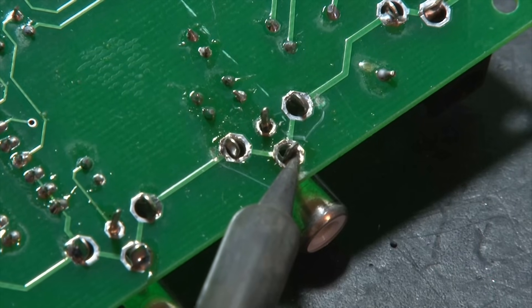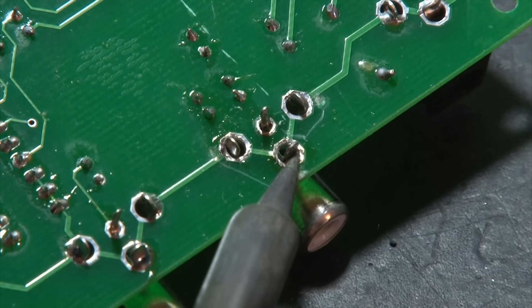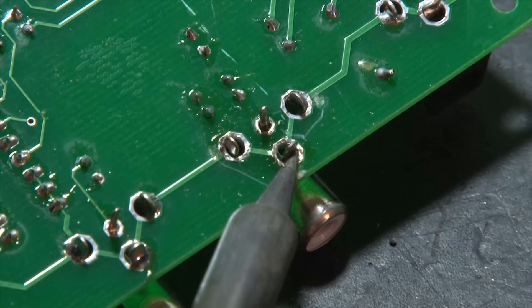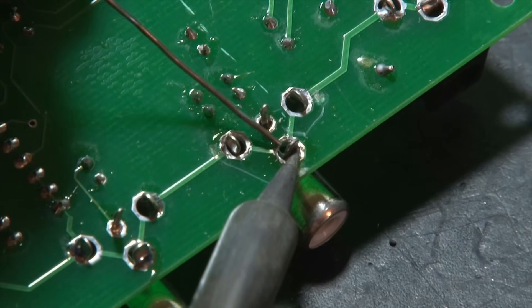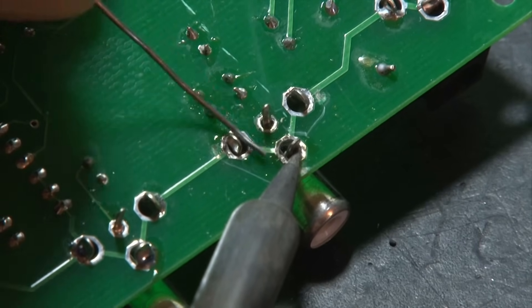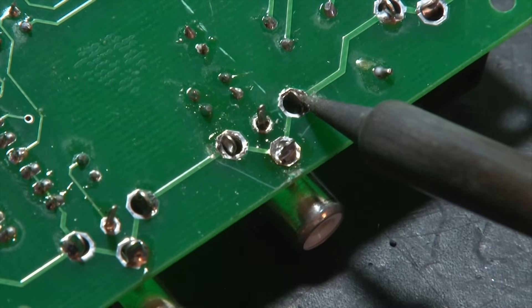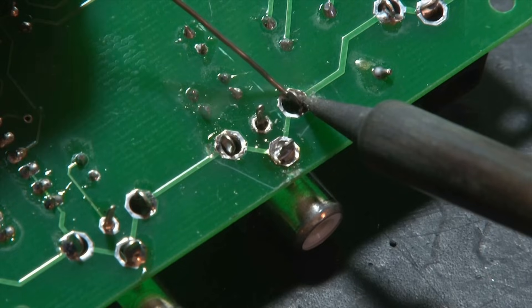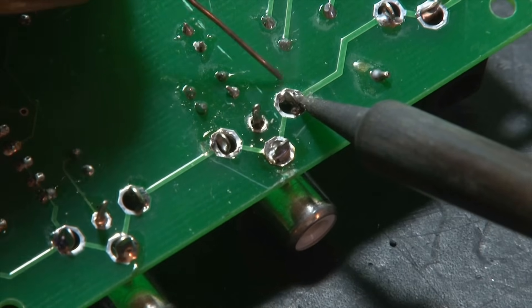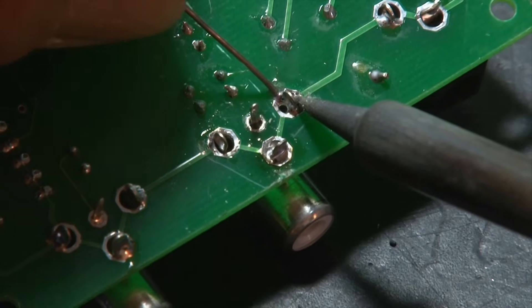As with any soldering, you always want to apply heat to both the pad, or in this case a through hole, and the leg. Let the solder do the work and fill the through hole completely. Again, apply heat and solder, and make sure solder fills the entire through hole and the leg.